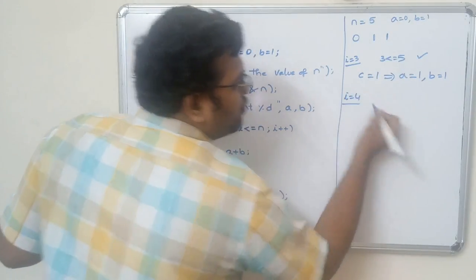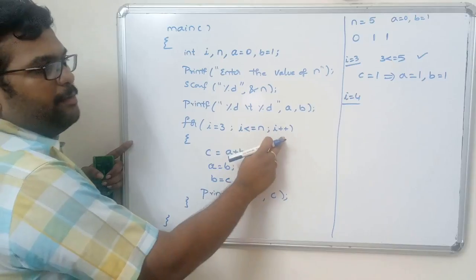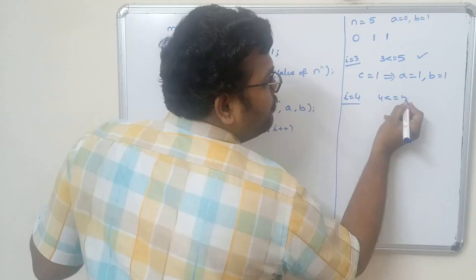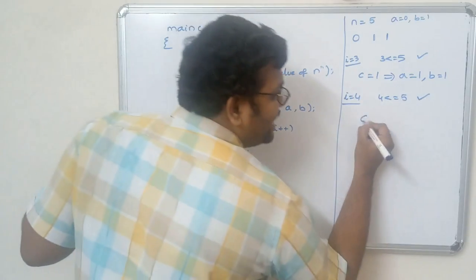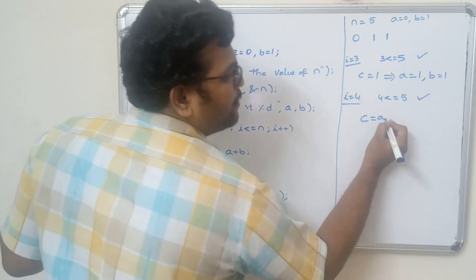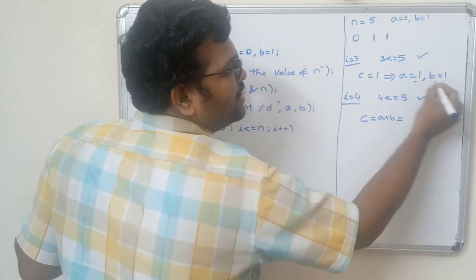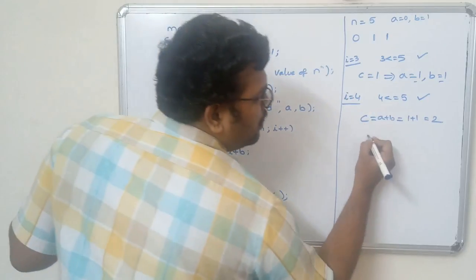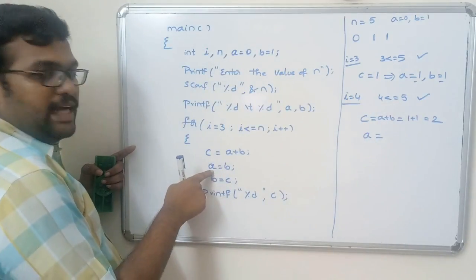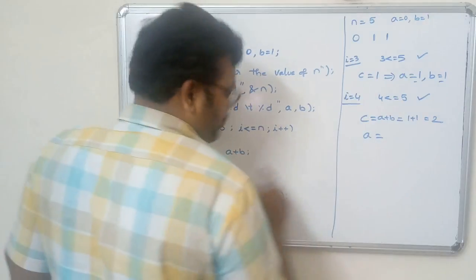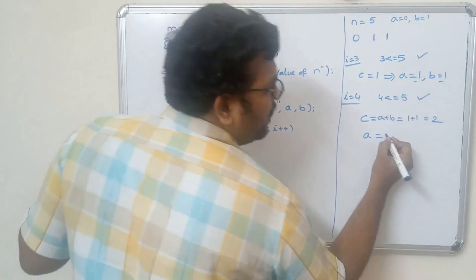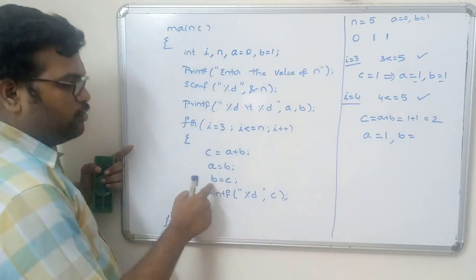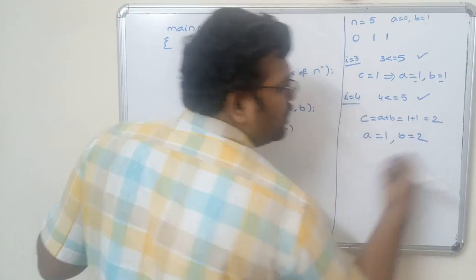i is incremented to 4. 4 less than or equal to 5, condition is true. c equal to a plus b: a is 1, b is 1, so c equals 2. b's value (1) is assigned to a, and c's value (2) is assigned to b. So now a equals 1 and b equals 2. c value 2 is printed.